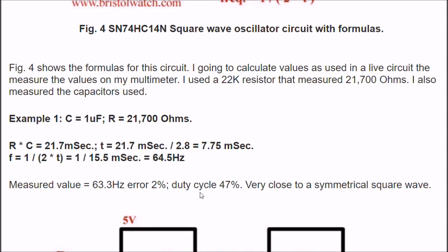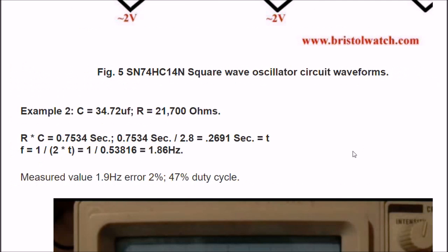The duty cycle was 47%, which means it's fairly symmetrical. I'll discuss in another video how to use this, and to get a perfect square wave. But it's a 47% duty cycle, very close to a symmetrical square wave. Alright, let's work out example number 2.